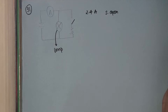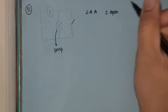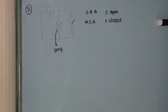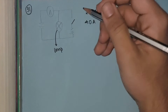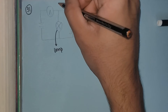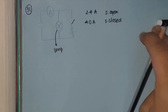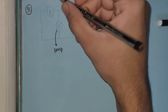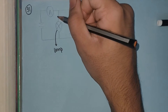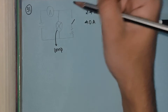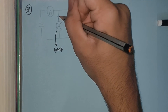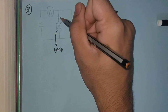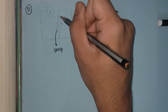When the switch is closed, we have been told that the ammeter reading is 4.0 amperes. We can immediately see that when the switch is open, current is only flowing in one part of the circuit. We can cover up the other part to understand what is happening. We know that 2.4 amperes always flows through the lamp, whether the switch is open or closed.